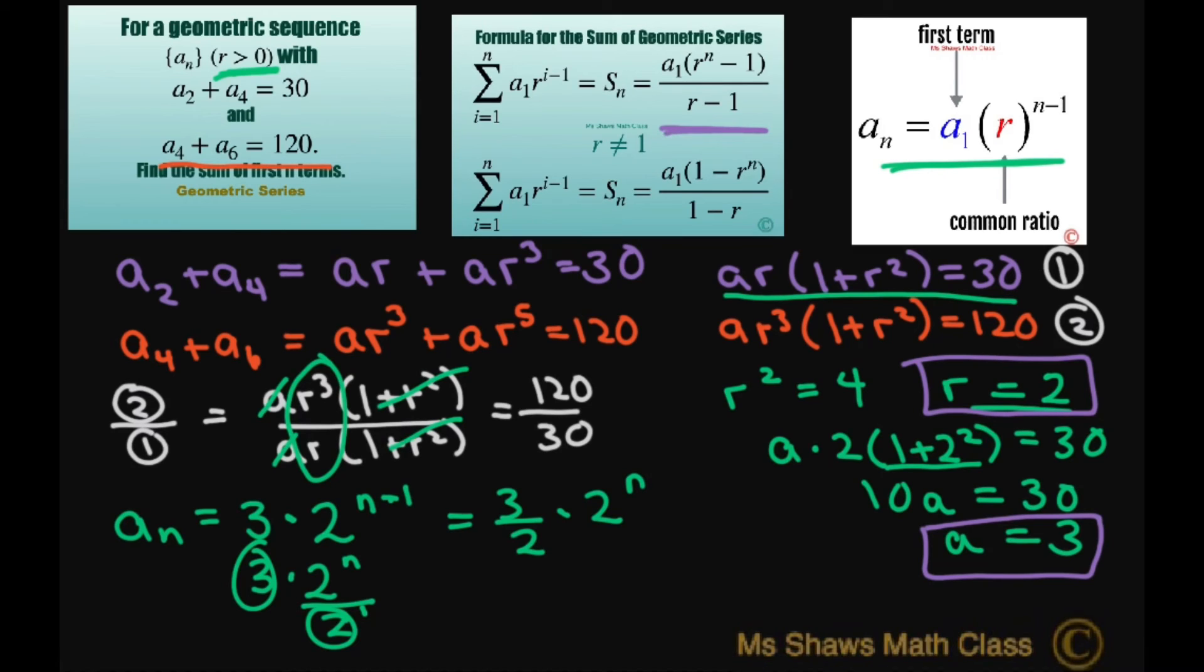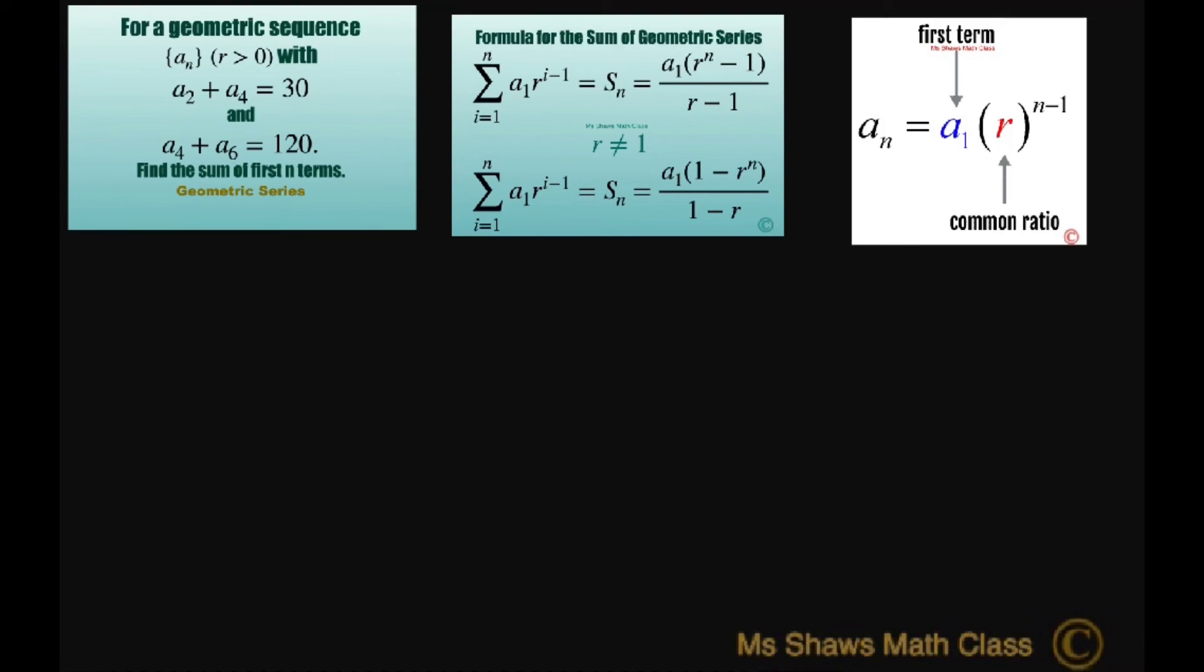So now let's find the sum using our formula. And we're going to get our sum is going to be your first term 3, our common ratio is 2 to the power of n minus 1 divided by 2 minus 1, and I use this formula here. So this is just going to be 1. So basically you're going to get 3 if you distribute. I'm just distributing here: 3 times 2 to the power of n minus 3.